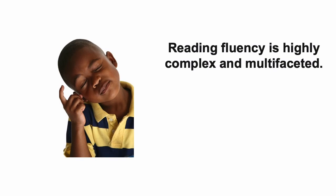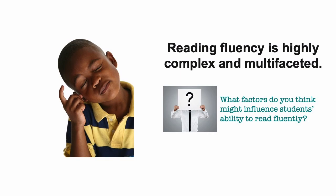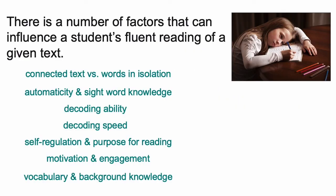Reading fluency is highly complex and multifaceted. Even in typically developing students, learning to read skillfully depends on high-quality instruction, exposure to print, and many other factors. Factors that can influence a student's fluent reading of any given text include automaticity and sight word knowledge, decoding ability and decoding speed, students' self-regulation and purpose for reading, students' motivation and engagement, and the vocabulary and background knowledge that students bring to the text. There is also a strong relationship between comprehension and fluency — fluency is key to comprehension, but it also works the other way around.